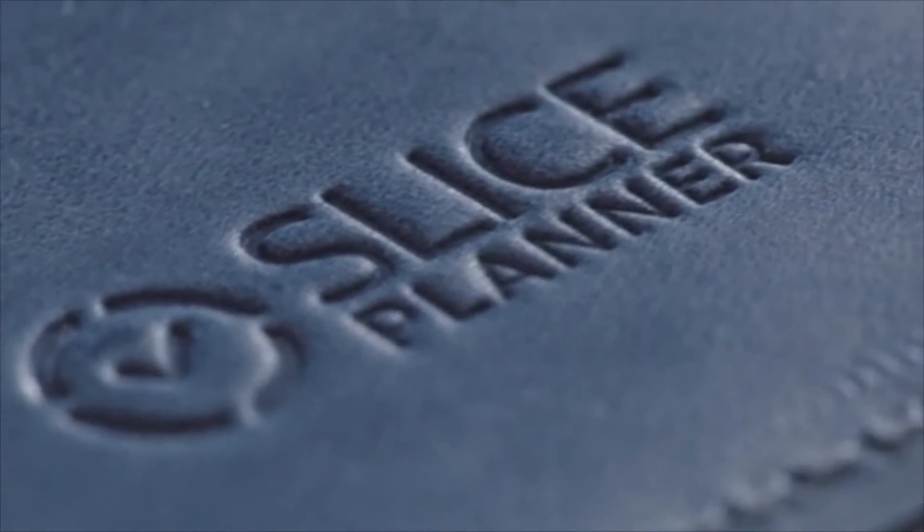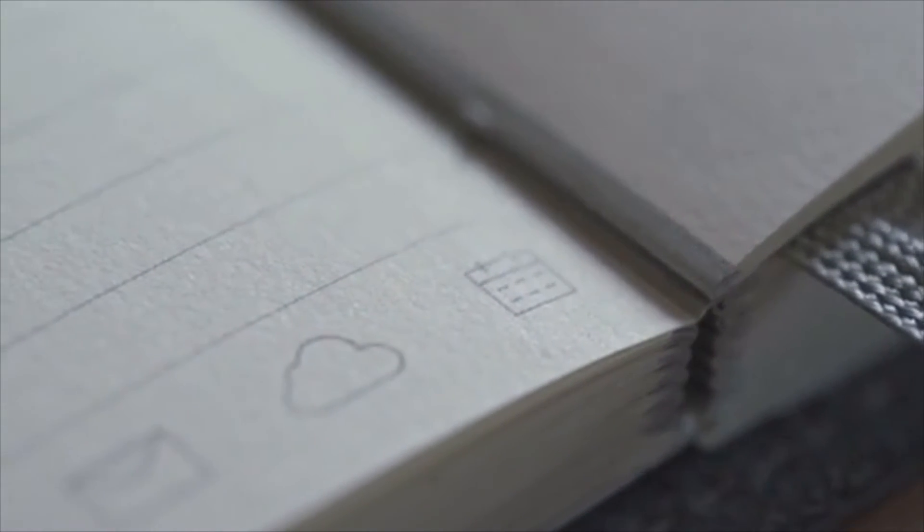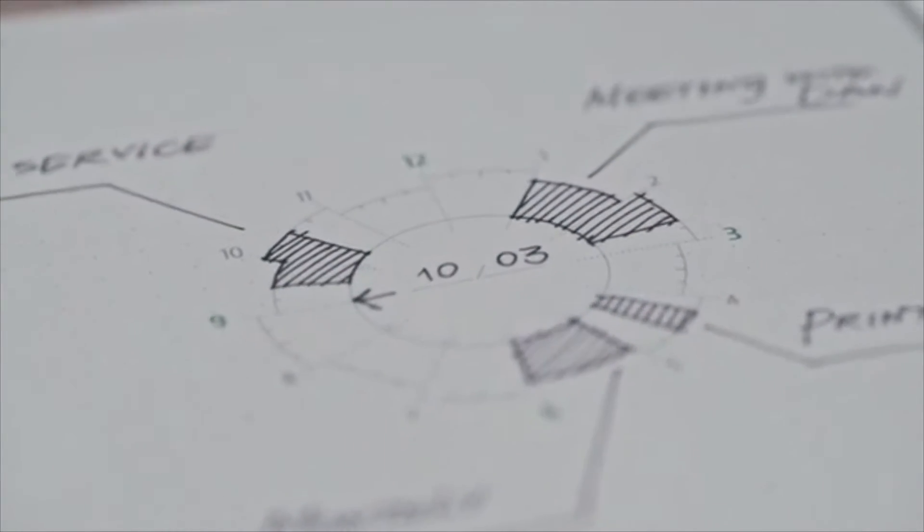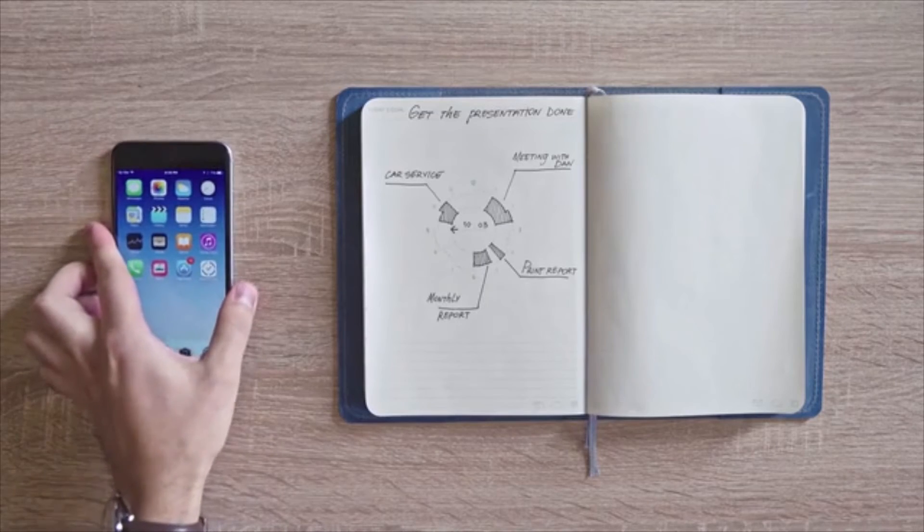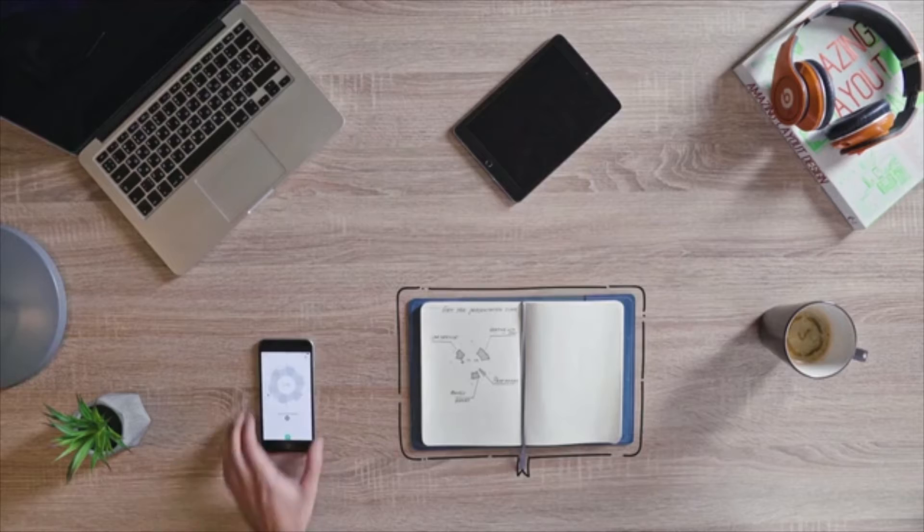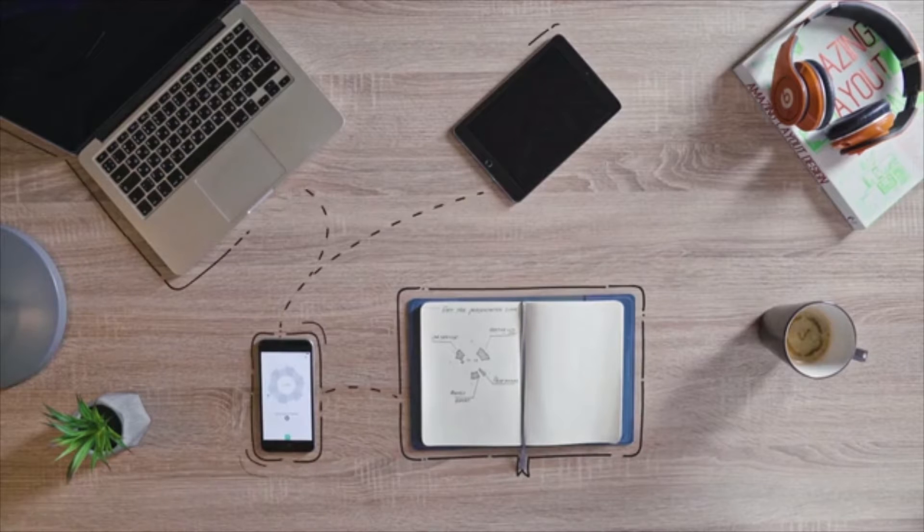So we designed the Slice Planner, the undated handcrafted paper planner made from all natural materials and premium Swedish paper, and developed an app that merges paper events with your favorite digital calendars.